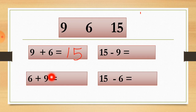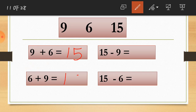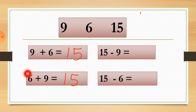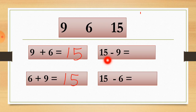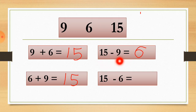Now the next sum is 6 plus 9. We just change the order — here we take 6 first, then 9. The missing number from the family is still 15, so 6 plus 9 equals 15. Now moving to subtraction: 15 minus 9. Draw 15 circles and cut 9 circles from it. The number 6 is missing from the family, so 15 minus 9 equals 6.